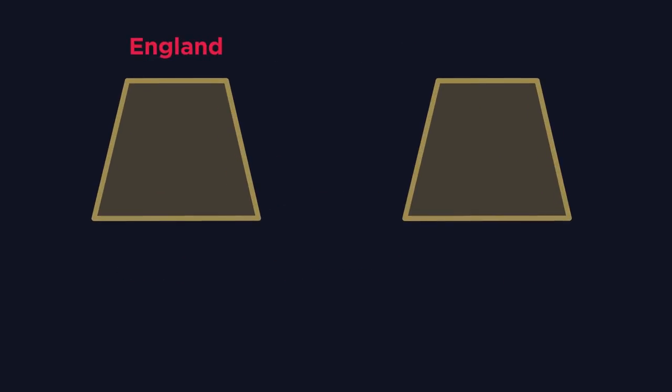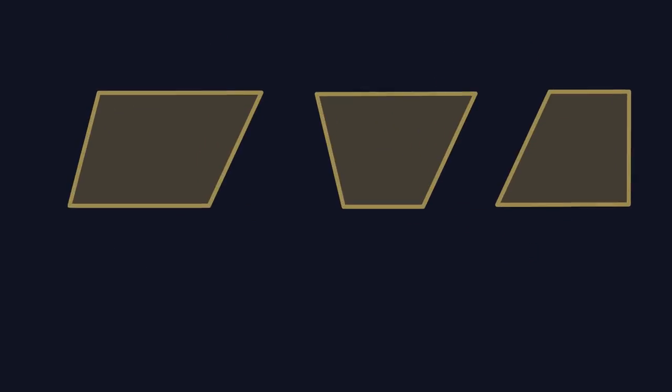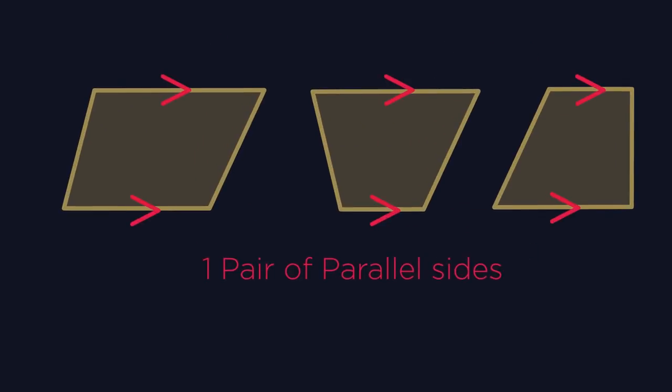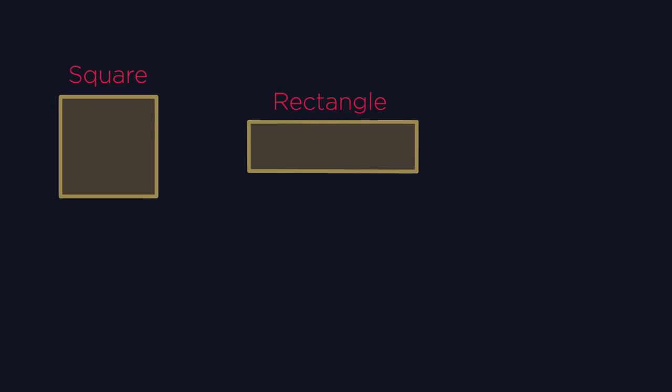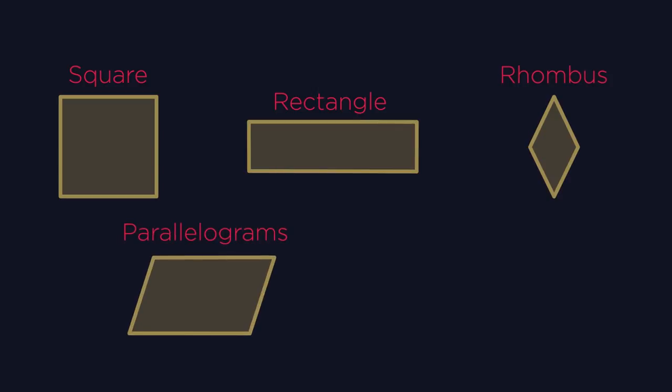In England, we call them trapeziums. In America, they're trapezoids. They simply have one pair of parallel sides. As trapeziums have such a simple definition, it actually means that squares, rectangles, rhombuses, parallelograms are also all trapeziums.